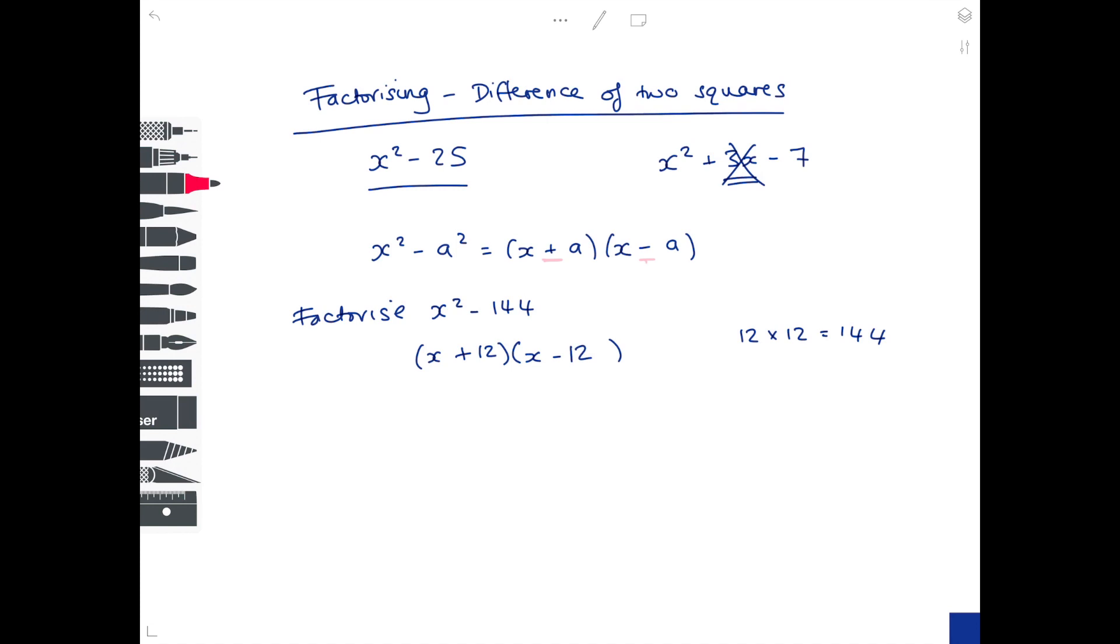We already know that the number is 12, and let's check that our answer is correct by using the FOIL method to multiply out the brackets. So remember, FOIL stands for first, so we multiply together the first values in the brackets, so that becomes x squared. Outside, so we multiply the outside values which is x and 12, so that's minus 12x. The inside values which is 12 times x is plus 12x. And the last values in the brackets, so we multiply plus 12 by minus 12, so that becomes minus 144. These two values cancel out, so our final value is x squared minus 144.